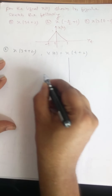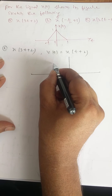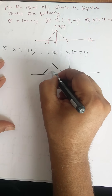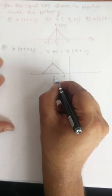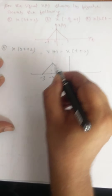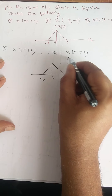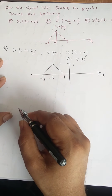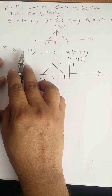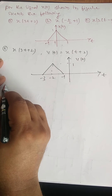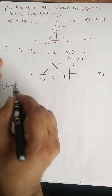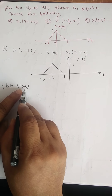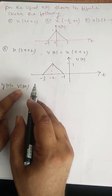The shifted version of this signal exists from minus 3 to minus 1, with the peak value of 1. This is v of t, the shifted version of x of t. Next, we should scale it by 3. That is, y of t is equal to v of 3t. Since the scaling factor is greater than 1, the signal will be compressed.